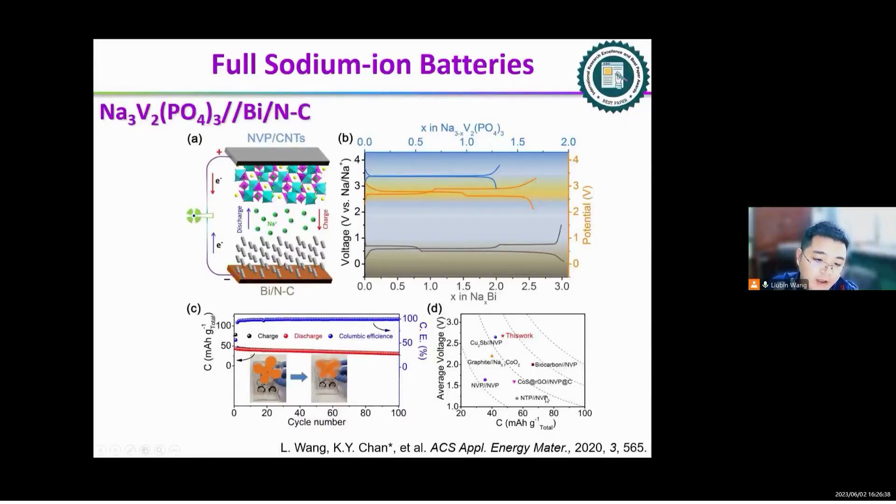After preparing high-performance alloy anodes, in order to evaluate its application in full cell, we designed and prepared several full sodium ion batteries. The first is we using NVP as cathode and bismuth as anode, which assembled the full sodium ion battery. It can power a self-made fan running.